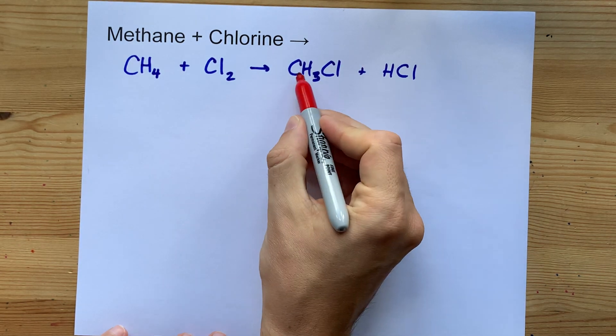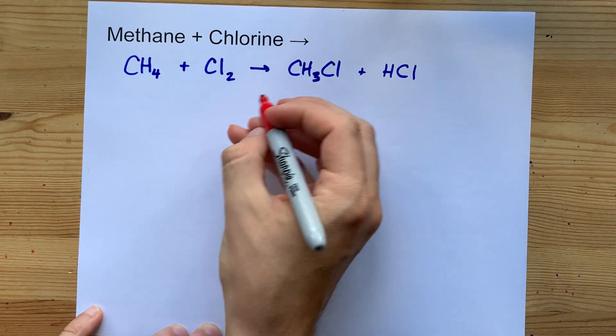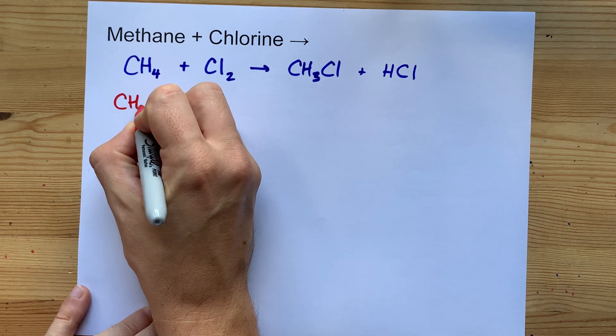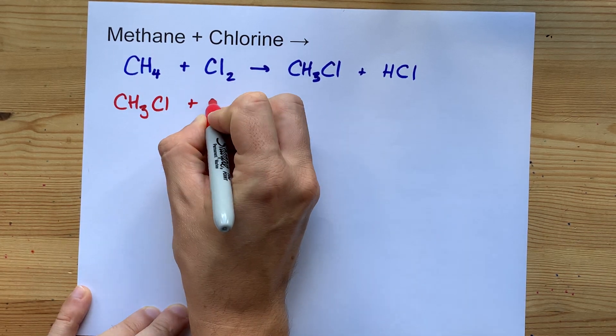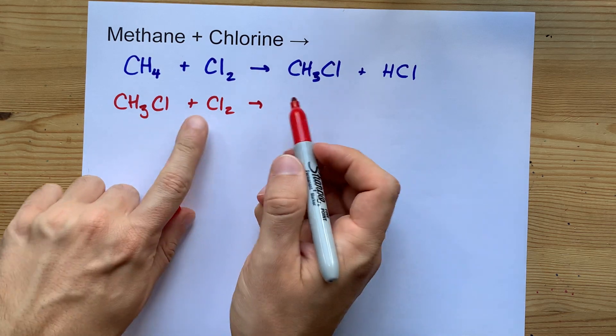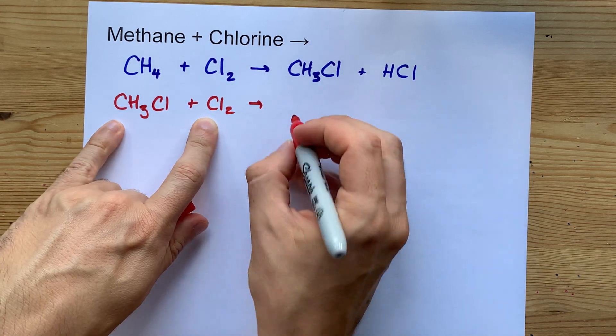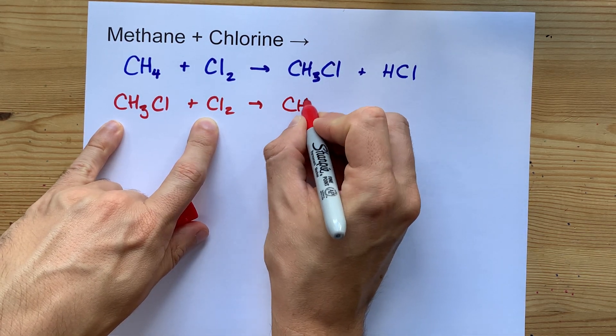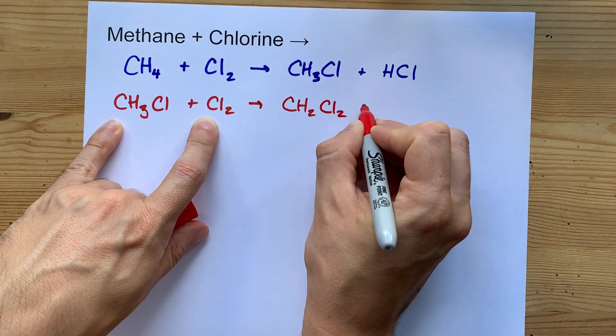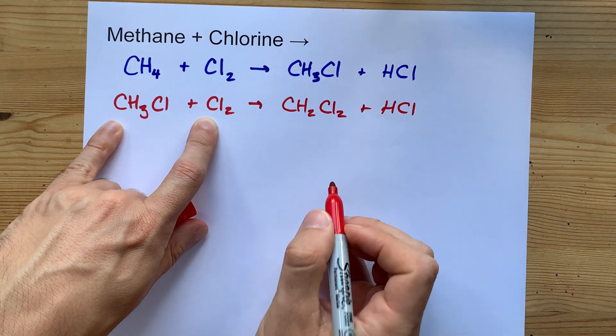And then this CH3Cl can also itself react with chlorine, which complicates it. In fact, if you react it with another chlorine molecule, perhaps you'll end up with CH2Cl2, and you'll get another HCl out of that.